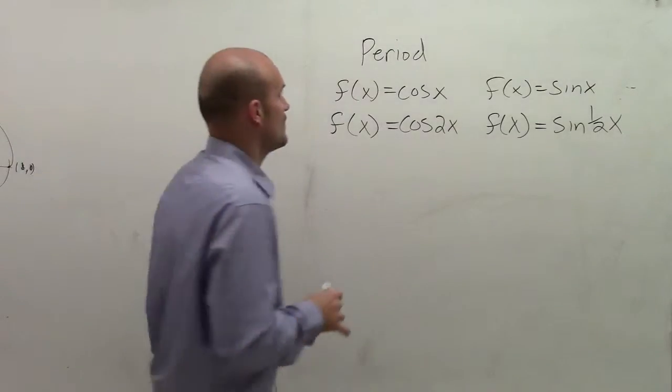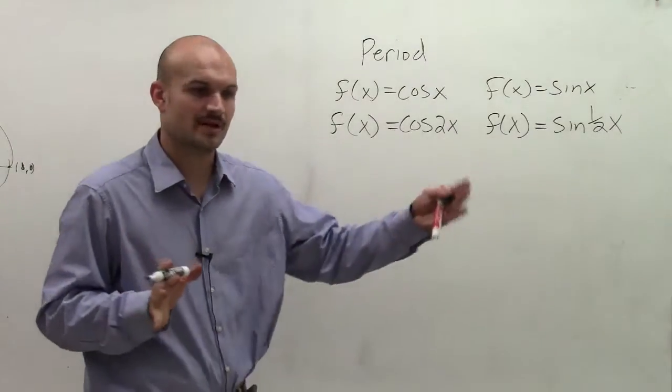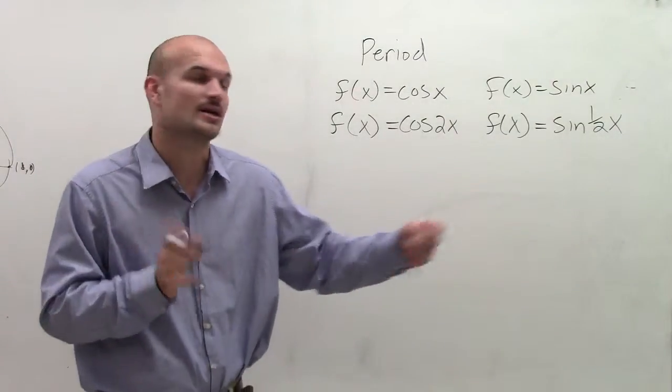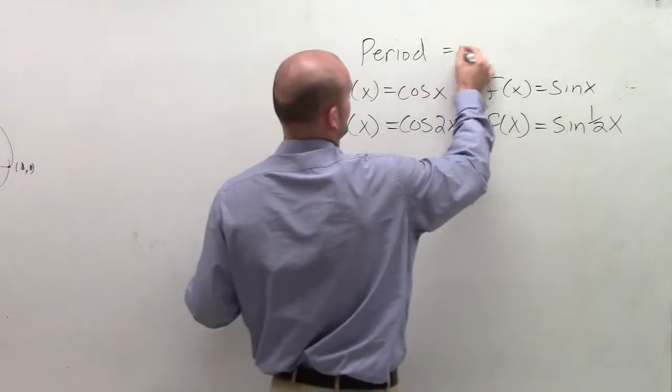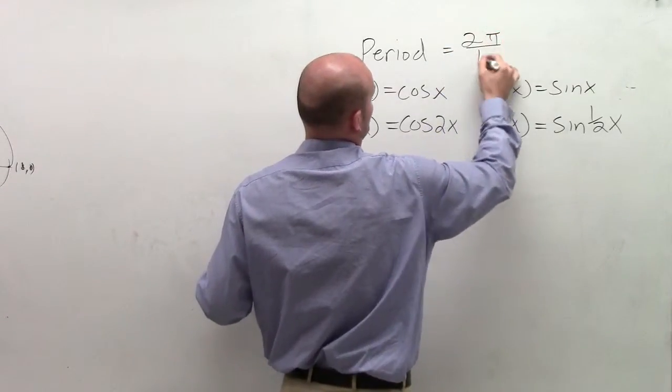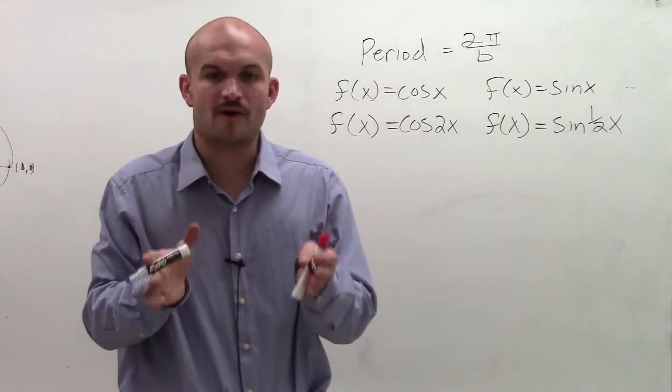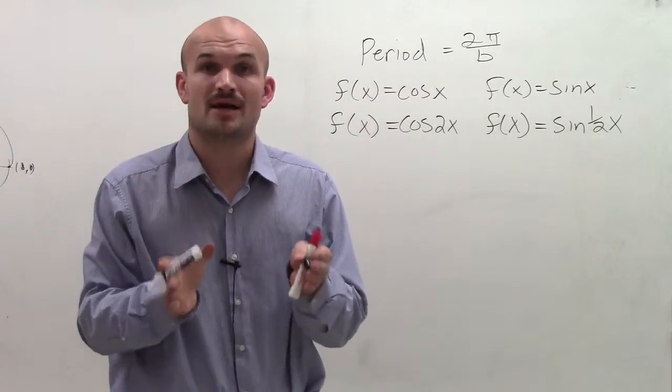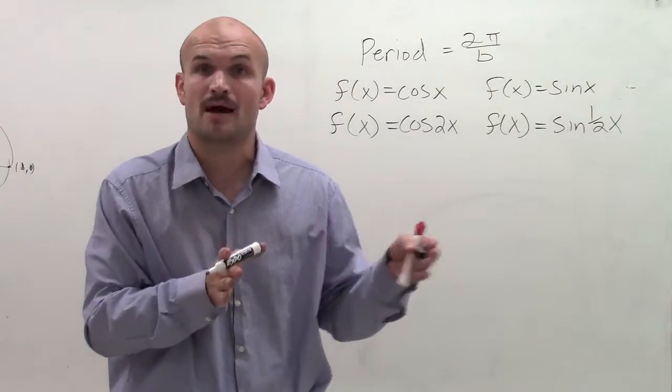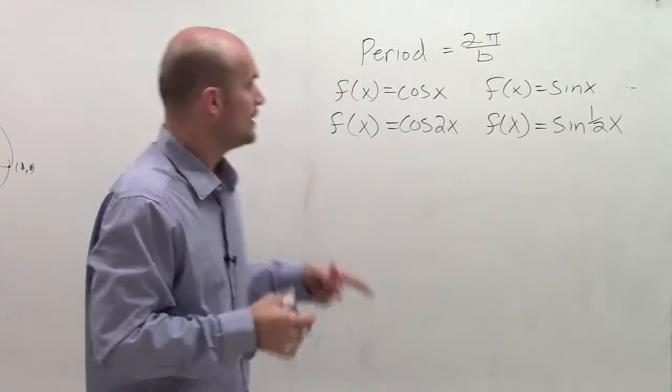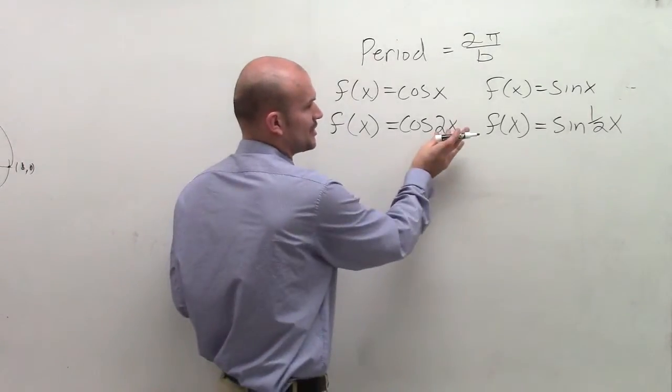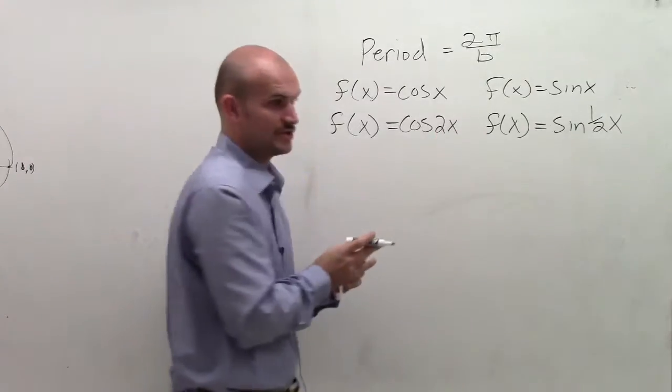The definition of period we talked about, but the formula to determine the period of a graph is going to be 2 pi divided by b. When we talked about function a, a was the number that was in front of your function that we multiplied by. That was for your amplitude.